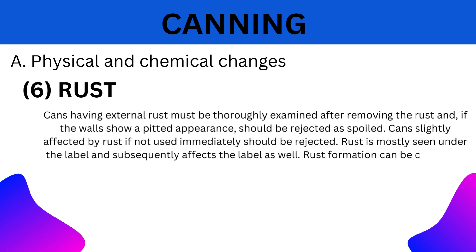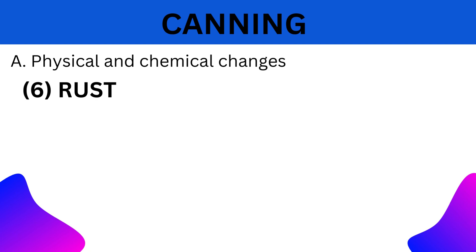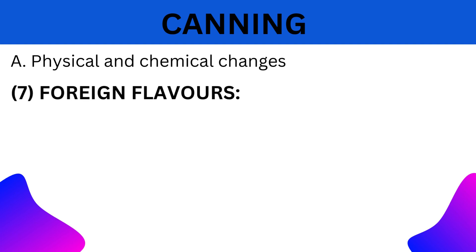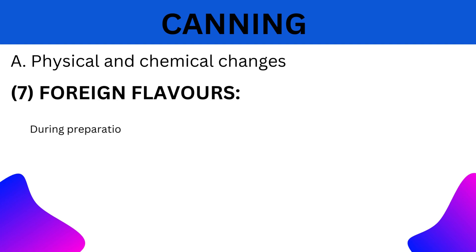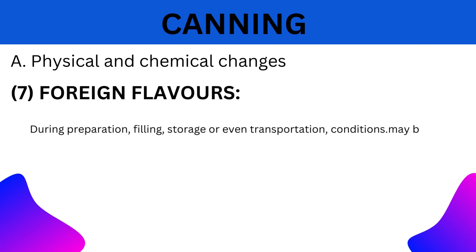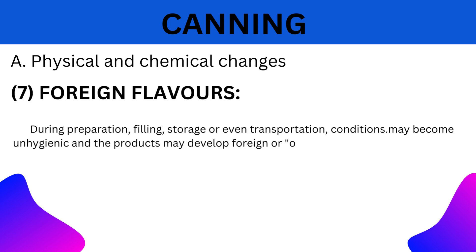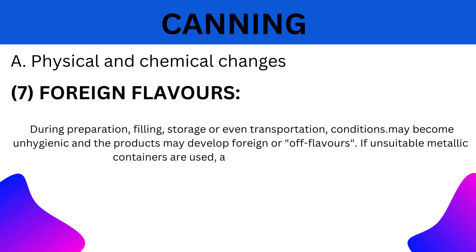Rust formation can be checked if the cans are externally lacquered. 7. Foreign Flavors: During preparation, filling, storage, or even transportation, conditions may become unhygienic and the product may develop foreign or off flavors. If unsuitable metallic containers are used, a metallic flavor develops.